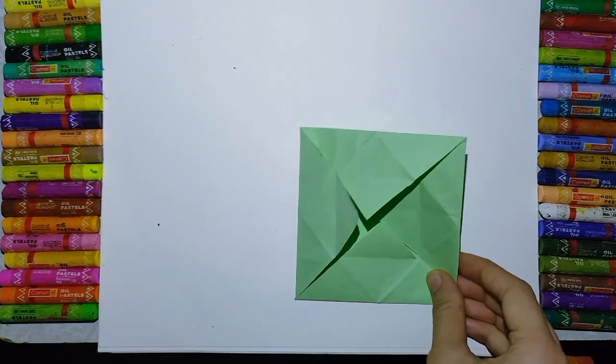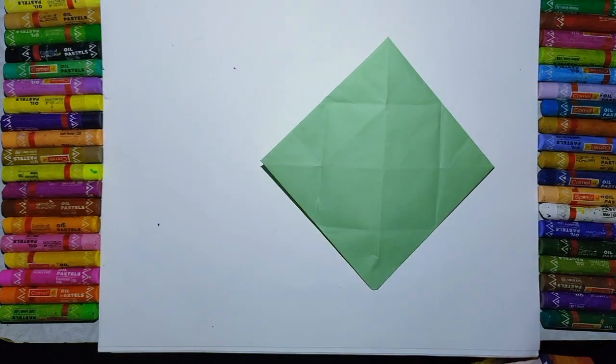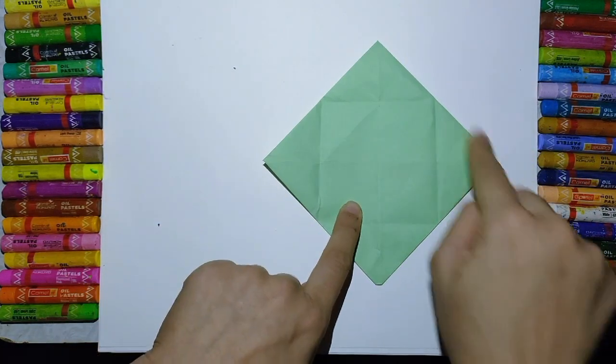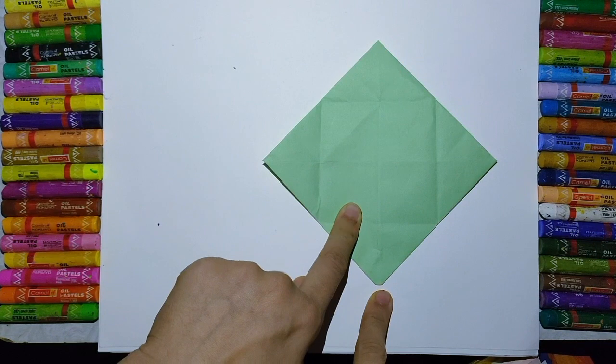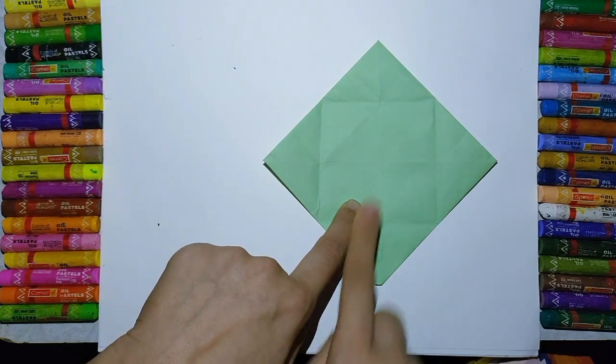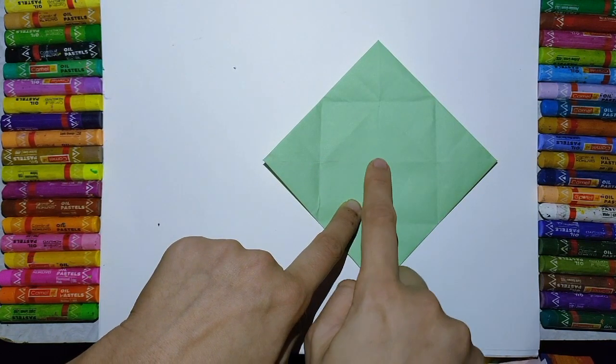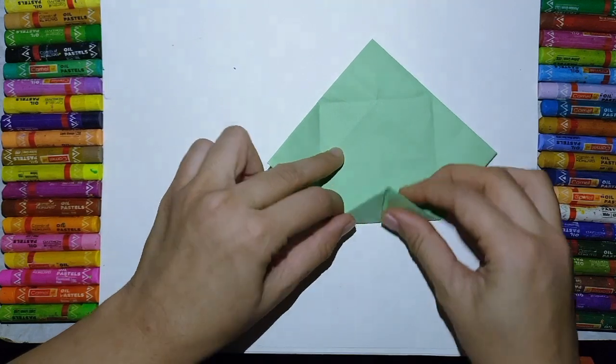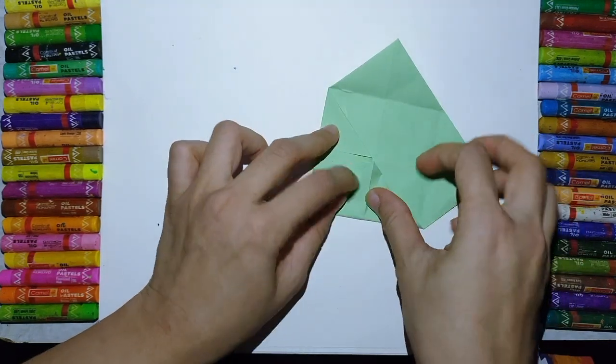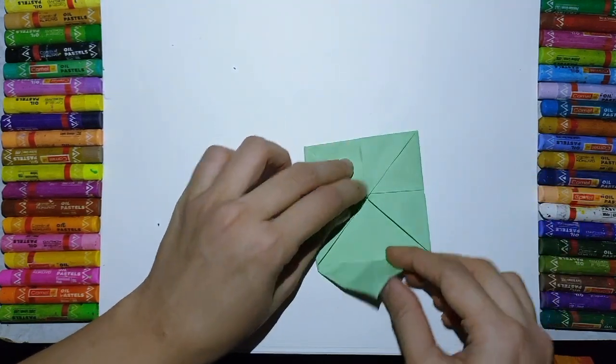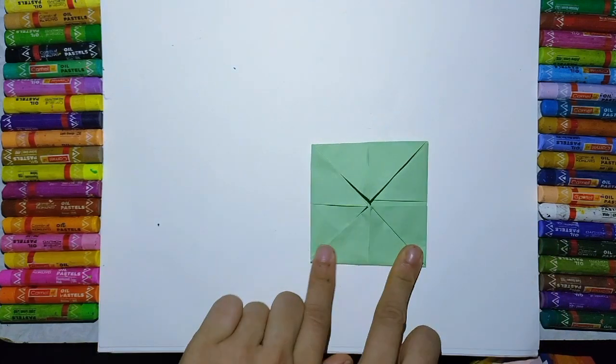Now turn the paper back side. One, two, three, four. Again four corners are there. One center is there. So this corner will come to this center. One, two, three, four. Am I clear everyone?